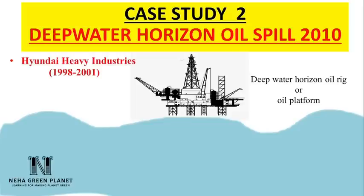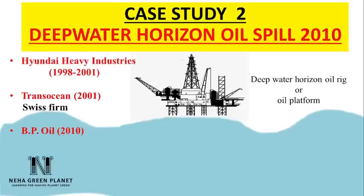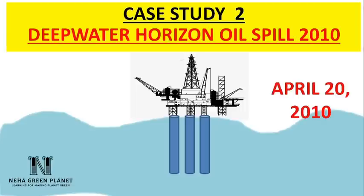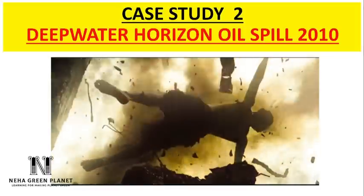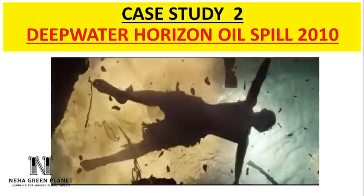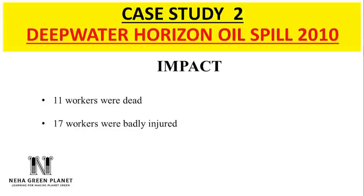The Deepwater Horizon oil rig was constructed by Hyundai Heavy Industries from 1998 to 2001. In 2001, Swiss firm Transocean became its owner and leased it to London-based BP Oil for extraction. On April 20, 2010, the rig was extracting oil from around 13,000 feet deep in the seabed. It is believed that failure of a blowout preventer device caused massive amounts of methane gas at very high temperature and pressure to burst out, resulting in a massive explosion that engulfed the entire oil rig in flames.